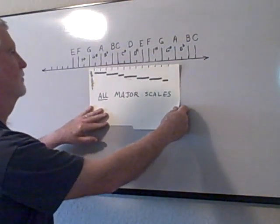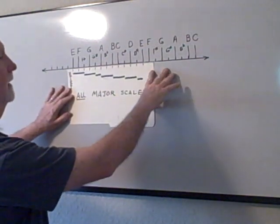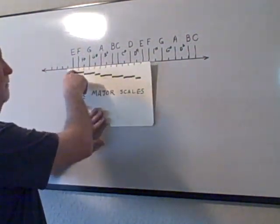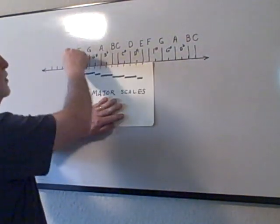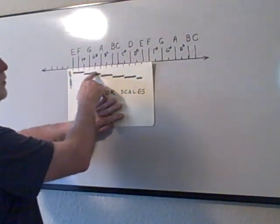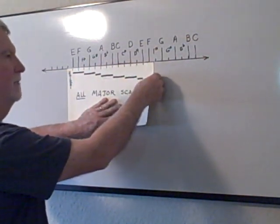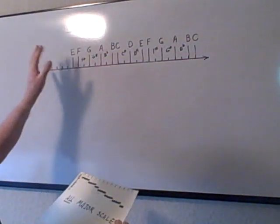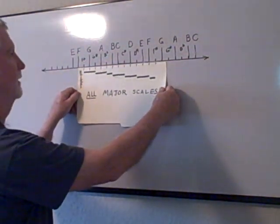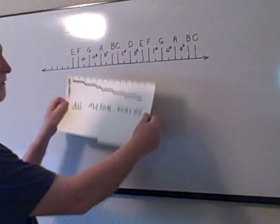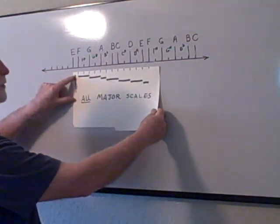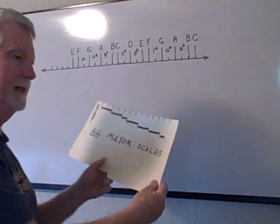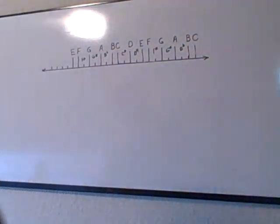The beauty of this tool is you can slide it anywhere. If you want to play in the key of E, slide it down to E and you get the notes of that major scale — E, F sharp, G sharp, and so forth. This tells you the notes in any major scale as long as you start with your tick mark at the right root. The same formula works for any key.